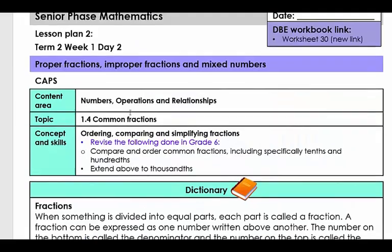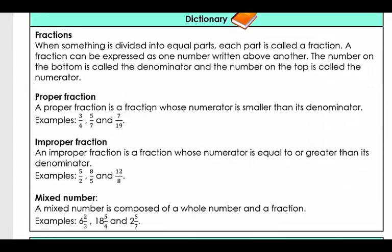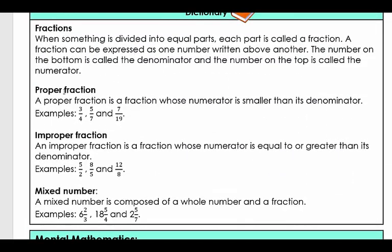Then what you can do is you go to the caps. Here you will see the caps link and this is in the dictionary, the focus of this lesson. So a proper fraction, here you will find examples of proper fractions. A proper fraction is a fraction where the numerator is smaller than its denominator. So here you can see three quarters. So the numerator is three and the denominator is four. Five sevenths and seven nineteenths.